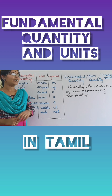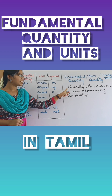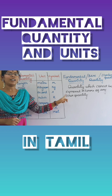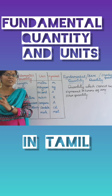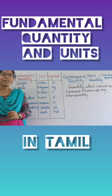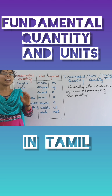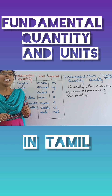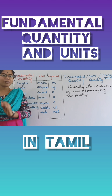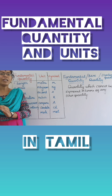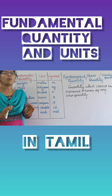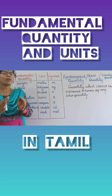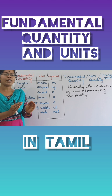A fundamental quantity is a quantity which cannot be expressed in terms of any other quantity. For example, if you have a 50 meter cloth, you can represent the quantity of time. If you have a 20 kg of fruits, you can represent the quantity of length. So, a fundamental quantity is a quantity that is independent.